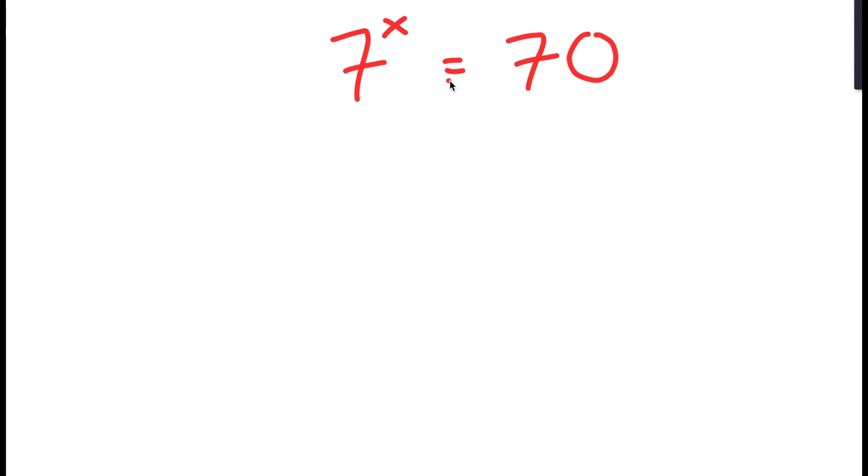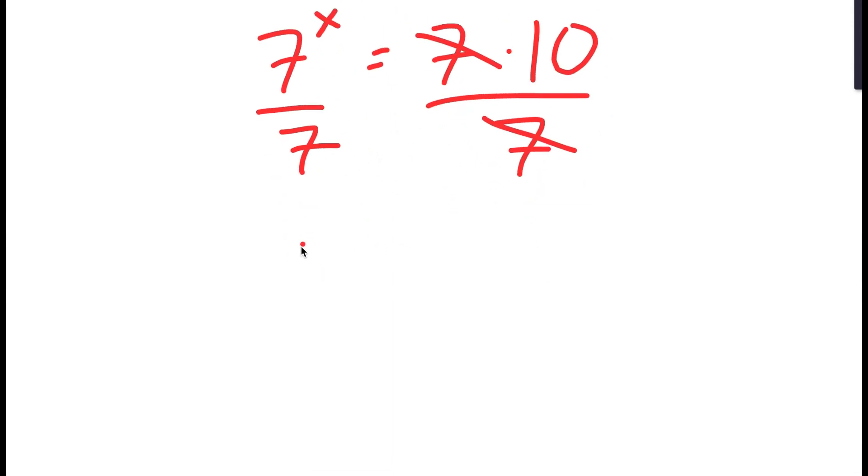To solve this, I'm going to first start by rewriting 70 as 7 times 10. And now from here, I can divide both sides by 7. The reason I'm doing this is because both of these terms have bases of 7, so it's better to combine them.